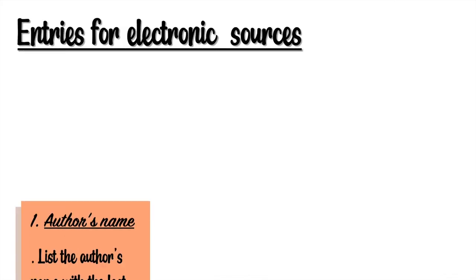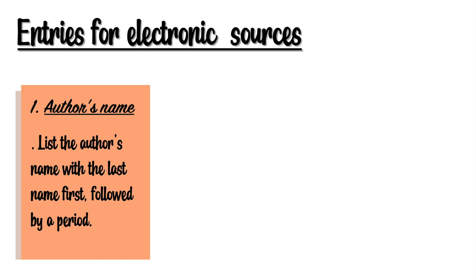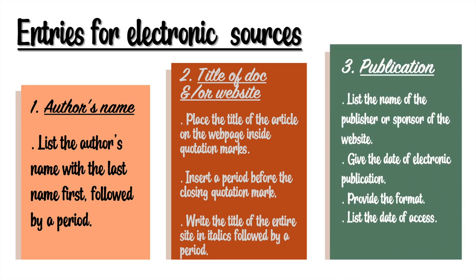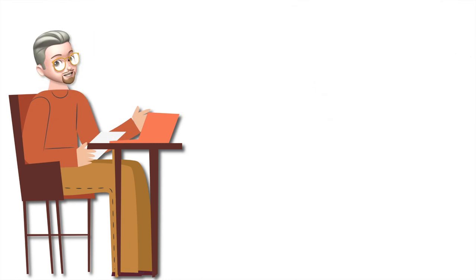Entries for electronic sources. First, the author's name — list the author's name with the last name first, followed by a period. Number two, title of document and/or website — place the title of the article on the web page inside quotation marks, insert a period before the closing quotation mark, and write the title of the entire site in italics followed by a period. Number three, publication — list the name of the publisher or sponsor of the website, give the name of the electronic publication, provide the format, and list the date of access.